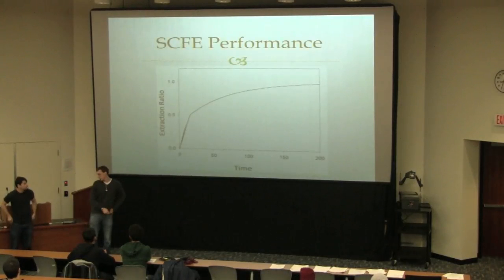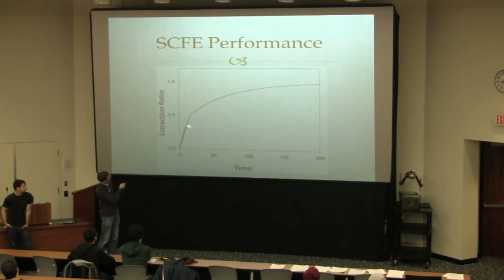So when looking at supercritical fluid extraction, it's best to look at how efficiently you're extracting the desired solute. This is a typical extraction profile of supercritical fluid extraction. Unfortunately, in the batch process itself, you're not going to be able to monitor this as it's going on. However, it's good to get a basic understanding of how supercritical fluid extraction works. You can see that there's two very distinct regions: there's an initial linear region here followed by an exponential region afterwards for a longer period of time.